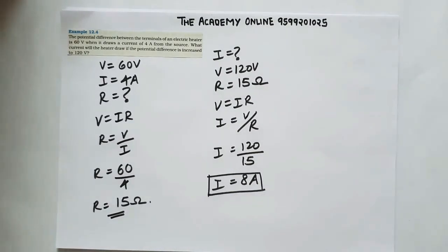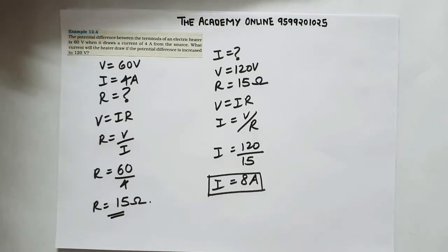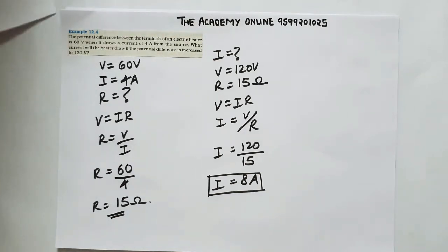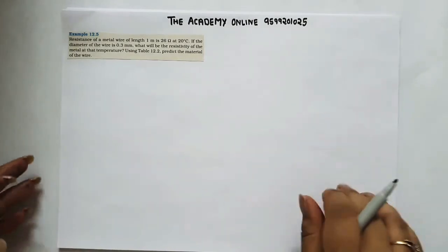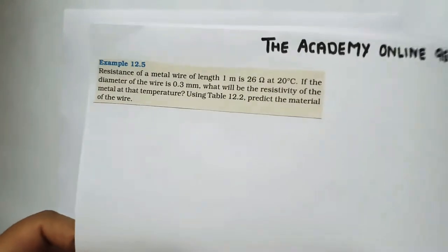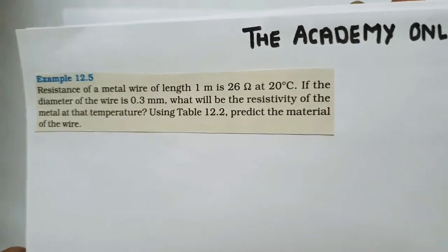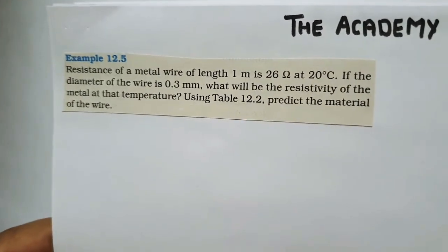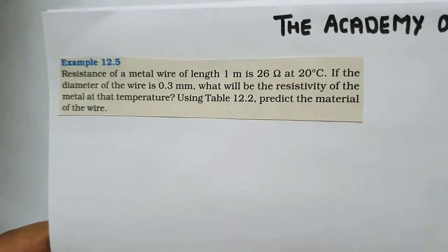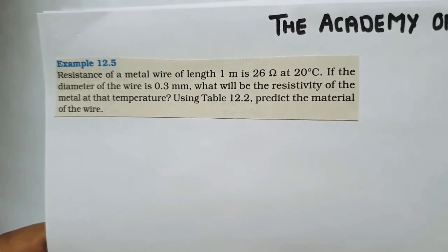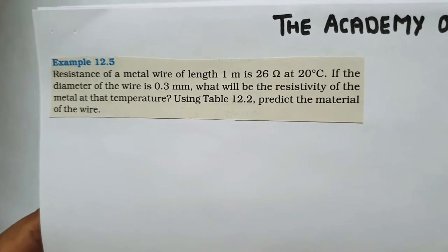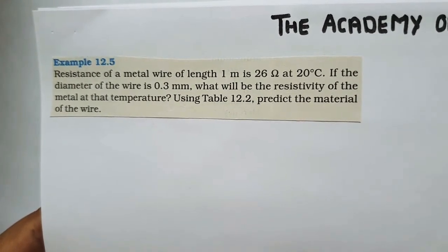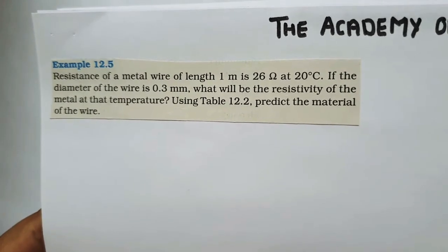Next problem: a metal wire of length 1 meter has resistance 26 ohms at 20 degrees Celsius. If the diameter of the wire is 0.3 mm, what will be the resistivity of the metal at that temperature? We will use the formula R equals rho L by A.